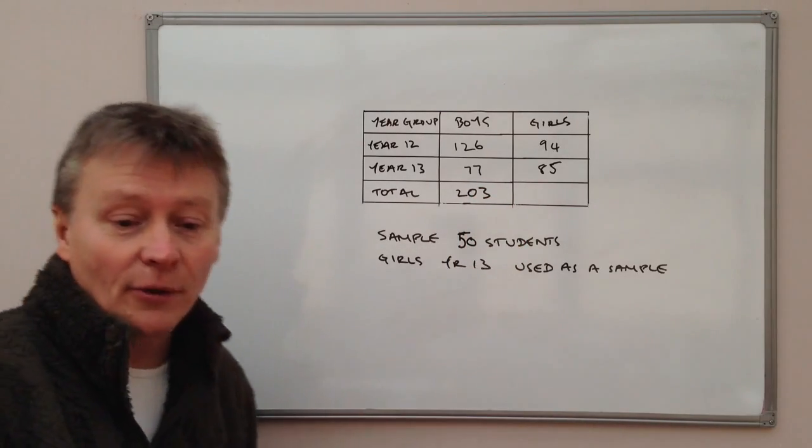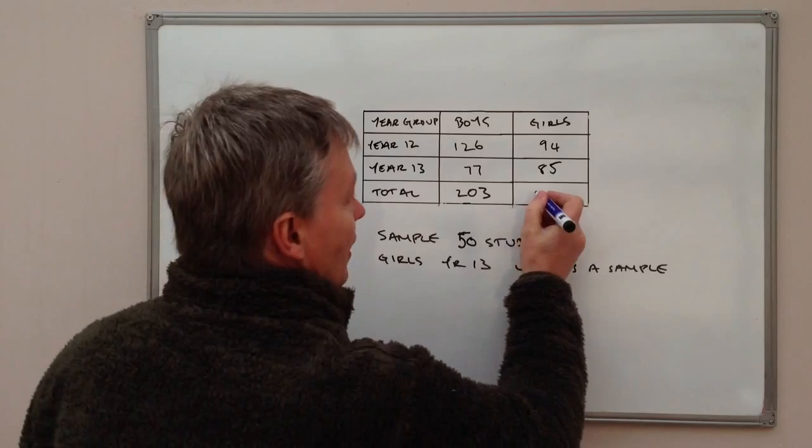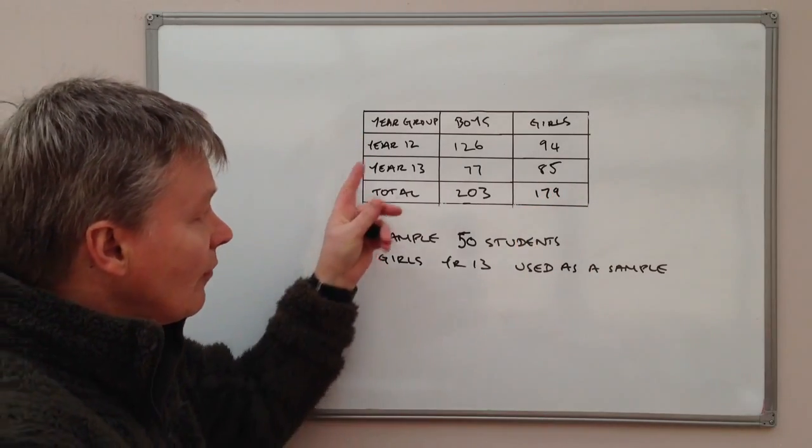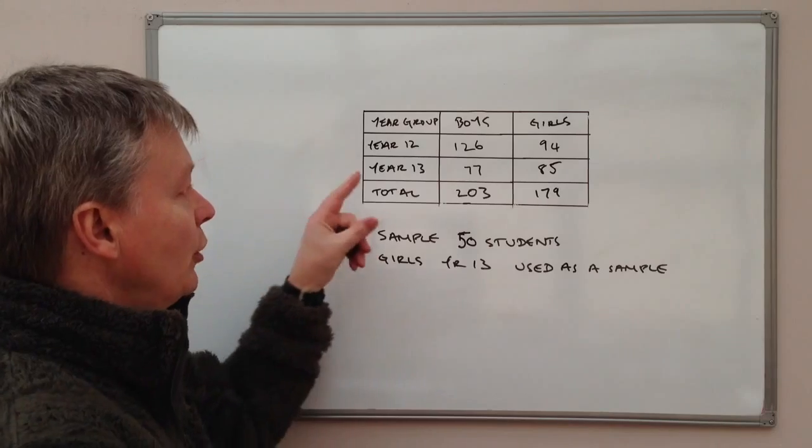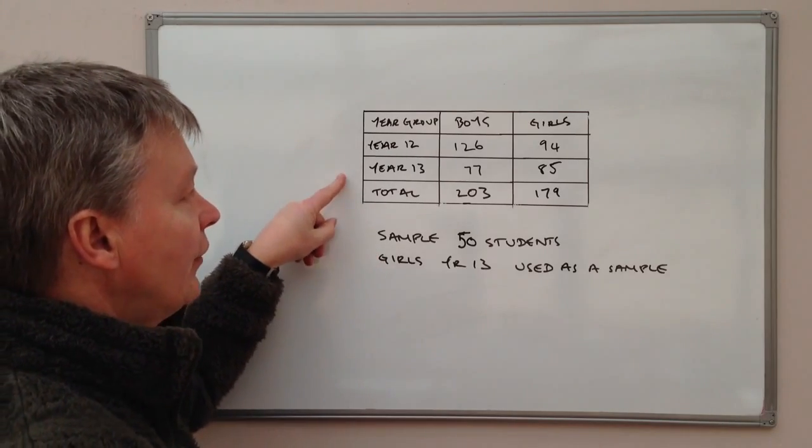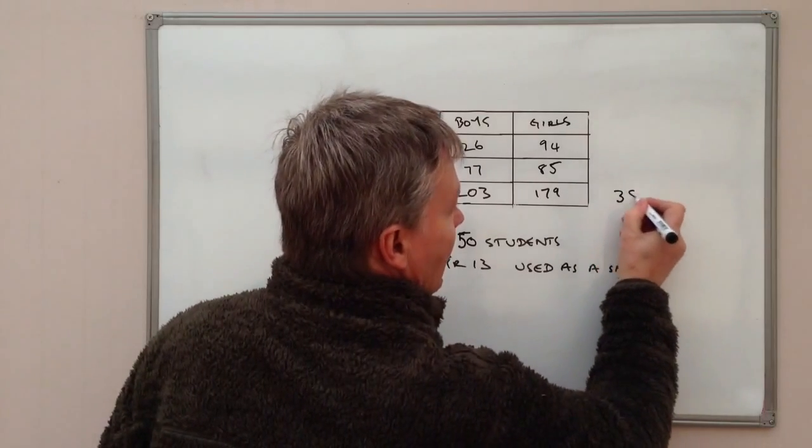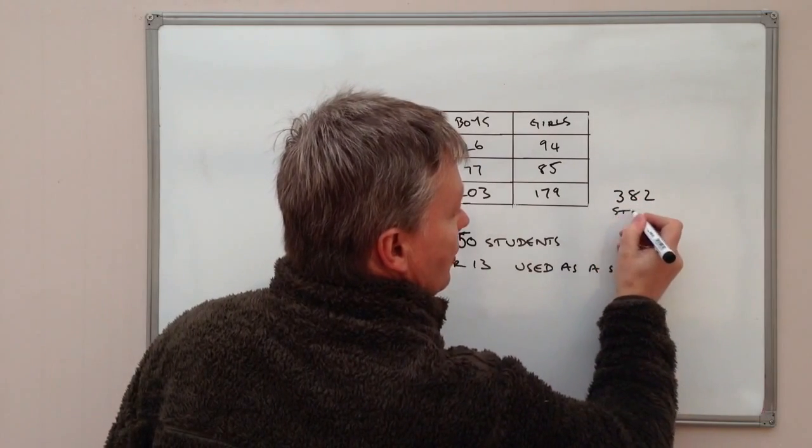Similarly with the girls, I'm going to add that together, that's going to be 179. So in other words, within the whole grouping of year 12 and year 13, there are a total of 382 students.